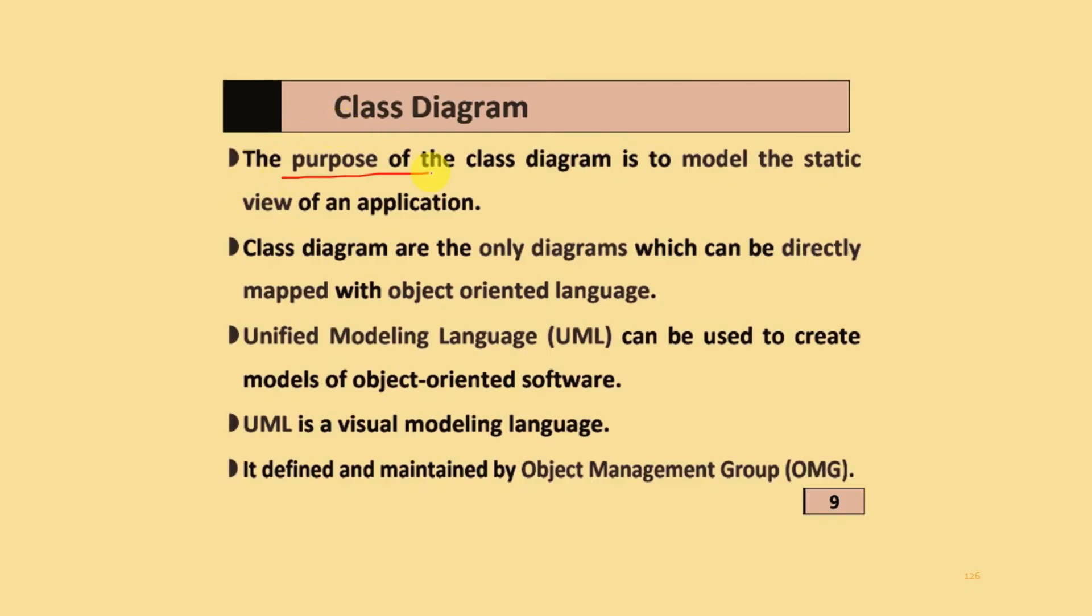What is class diagram? The purpose of the class diagram is to model the static view of an application. Class diagrams are only diagrams which can be directly mapped with object-oriented language.